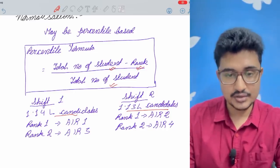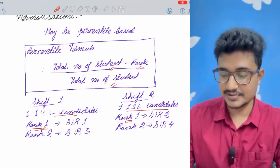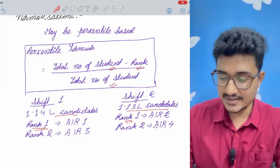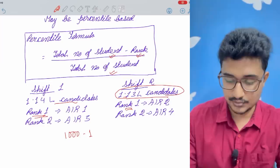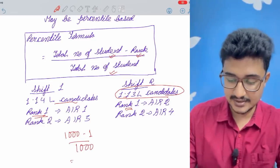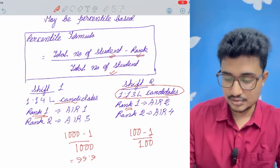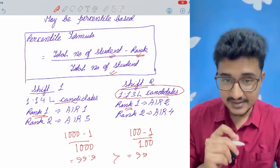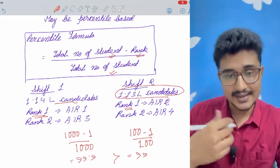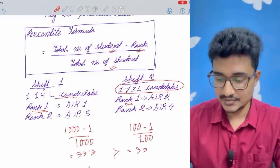So in shift one according to the marks if someone gets rank one then his percentile will be more than that of rank one of shift two because the total number of candidates is lesser. If there are thousand students and one has got rank one so his percentile will become 99.1 and if there are 100 and one has got rank one so his percentile becomes 99. So 99.9 is greater than 99. If there are more number of candidates in that sitting then his percentile is going to be better than the rank one of the lesser number of candidates. This is simple math.